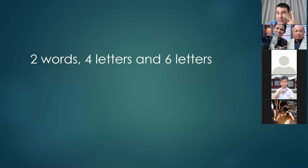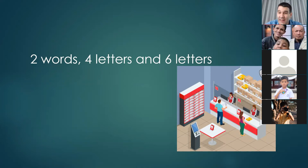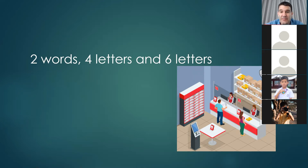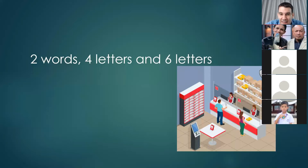The next one is also two words — the first has four letters, the second has six. It is where you go to send letters or packages to people. If you want something sent to Canada or America, you go here. Maybe a little bit more difficult — the first word is 'post,' P-O-S-T, and the second word is 'office,' O-F-F-I-C-E. Post office — you should know this one.